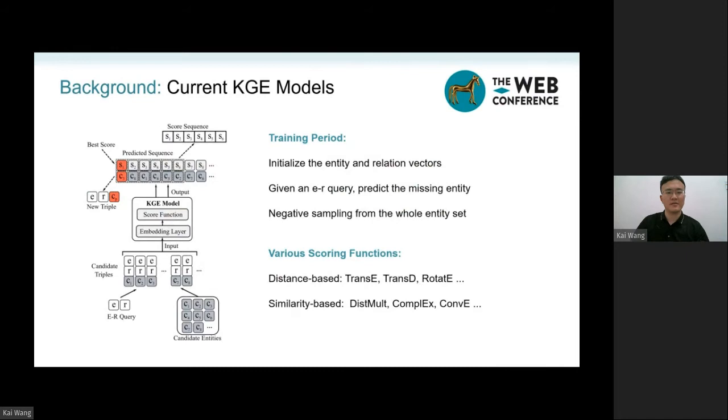This is the basic framework for current KGE models. Given an ER query, including an entity and the relation of a triple, we train the model to predict the missing entity from the whole entity set.